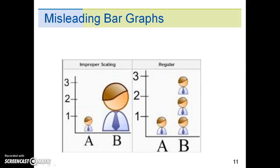Here is a misleading bar graph example which focuses on improper scaling. In the graph on the left, item B is increased both vertically and horizontally, making it appear bigger than the regular B.